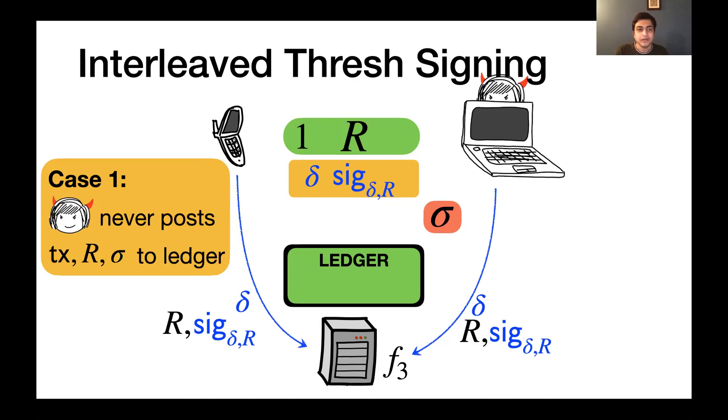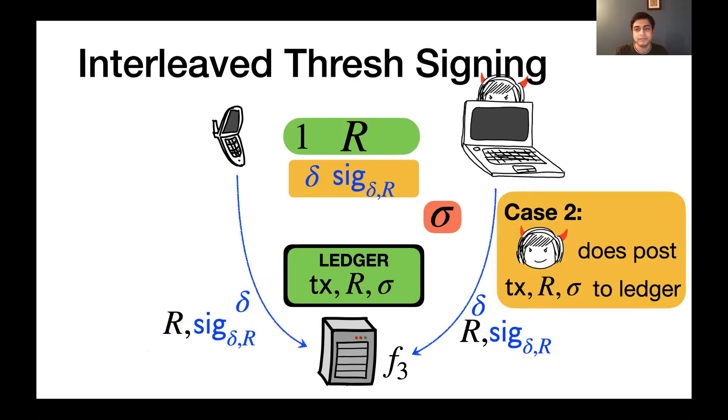The adversary could alternatively finish phases one and the refresh package generation and complete phase two and keep the signature for itself, depriving the honest party of the signature. So there are two cases now. In the first case, the adversary could just decide never to post the signature on the ledger. And this is fine because, again, the refresh package is never going to be used by either the online honest party or the offline party. In the other case, the adversary could actually post the transaction and the signature on the ledger. And this is fine because this is almost identical to the honest use case because both parties are going to delete their own shares and move on and apply the refresh package. And so now we have a unanimous erasure.